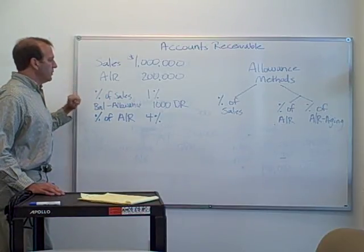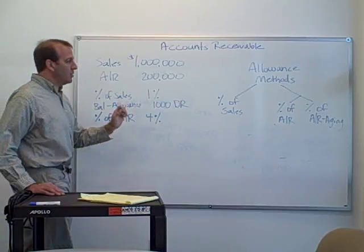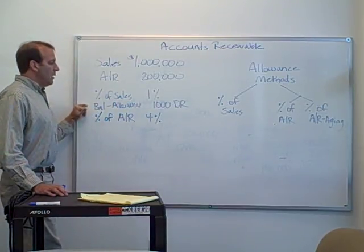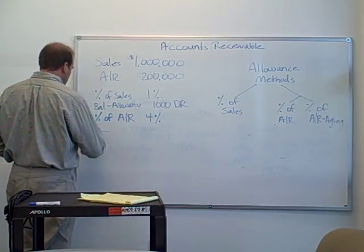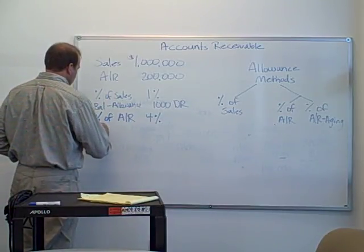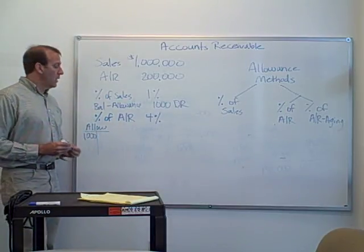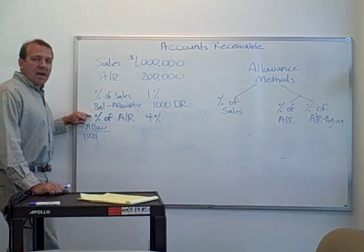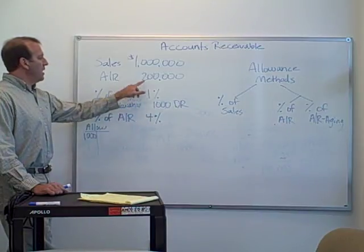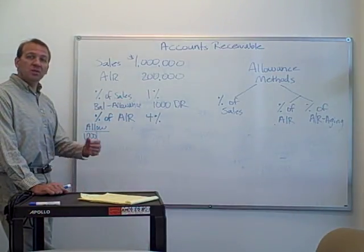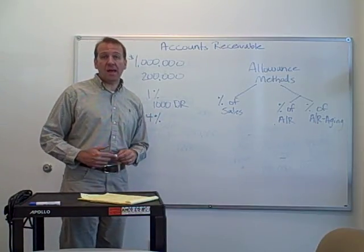Sales are $1 million, accounts receivable $200,000, and the percentage of sales was 1%, but we're not going to use that — we used that in the last video. The balance in the allowance account right now is $1,000. Here is our allowance account and it currently has a debit balance in it. The percentage of accounts receivable is 4%.